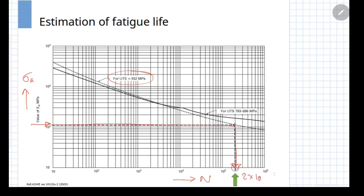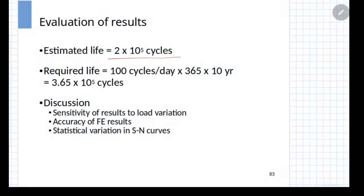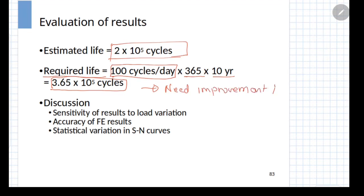You compare this life which is calculated against the required life. Required life for example, typically it is 100 cycles per day if that is the value of the cycles, then 365 days multiplied by 10 years assumed life. You require the number of cycles minimum to be 3.65 into 10 to the power of 5. Since our estimated cycles are smaller than the one which is required, that means you need a change in design or you require improvement in design in order to satisfy the criteria of fatigue analysis.